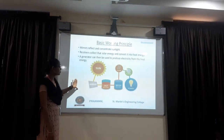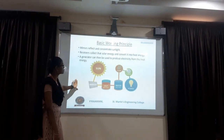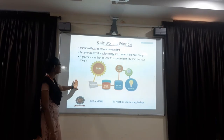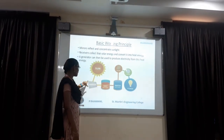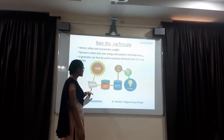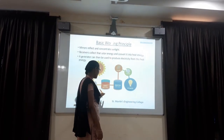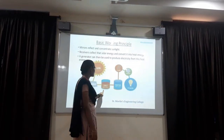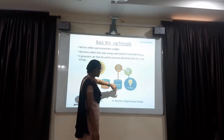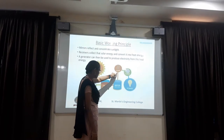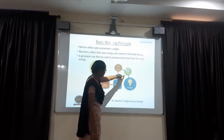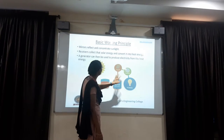This is the basic working principle of the solar thermal conversion system. The sun is connected to the mirrors, and the mirror is connected to the hot water system. We have a source and water. The hot water produces steam, and the steam is connected to the turbine, which is connected to the generator.